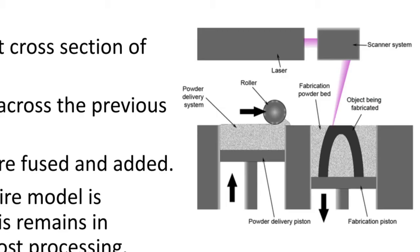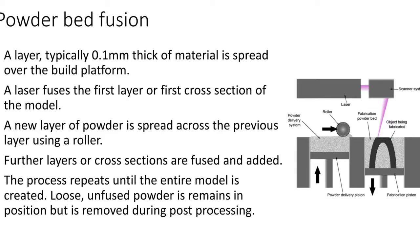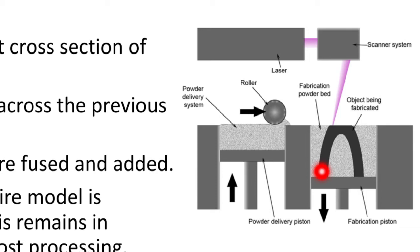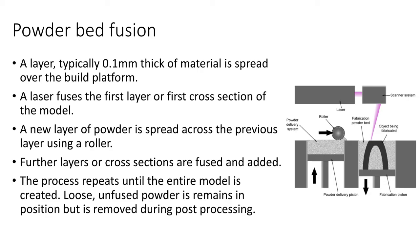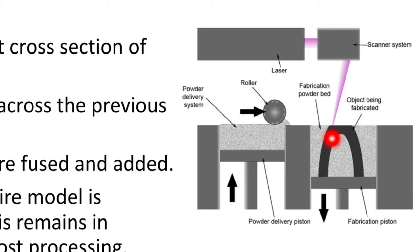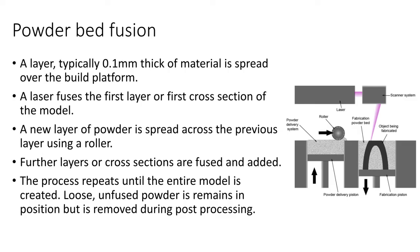A new layer of powder is spread across the previous layer using the roller, and again the laser fuses the required cross-section of that layer. This process repeats until the entire model is created. Loose unfused powder remains in position but is removed during post-processing, giving us the final component.